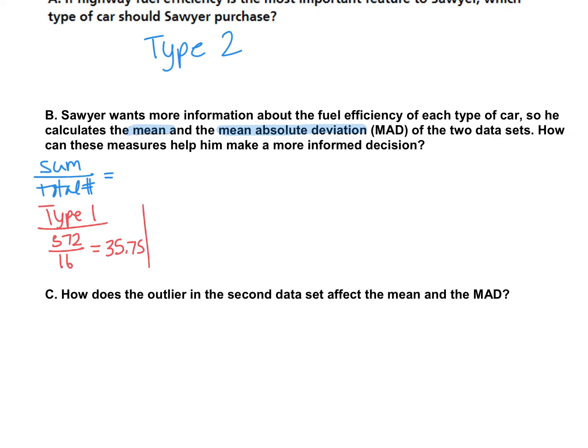For type two, the type two cars he was looking at, the sum was 644, divided by the total of 16 cars gave us a mean of 40.25. So you can see that one has a higher average than the other. Type two has a higher average of miles per gallon in terms of fuel efficiency on the highway.